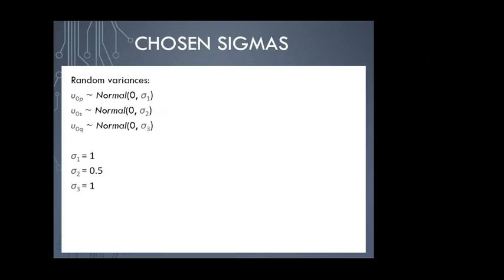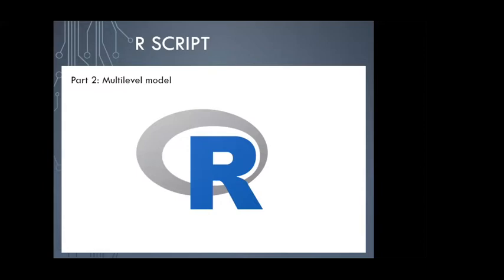For our simulation, we'll select these sigmas: pupil variance is normal with mean 0, standard deviation 1. Schools are a little less variable — standard deviation 0.5, reflecting that teaching quality doesn't differ too much between schools. Questions are also noisy — standard deviation 1. I'm not basing this on research; these are selected for convenience here, but they're not unreasonable — not crazy big, not crazy small. If doing this properly, you'd want to do due diligence with prior research.